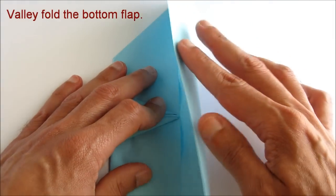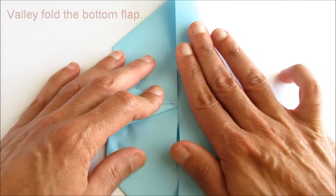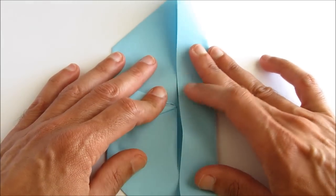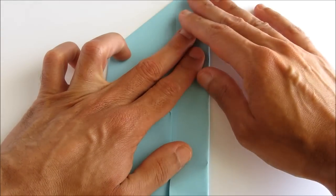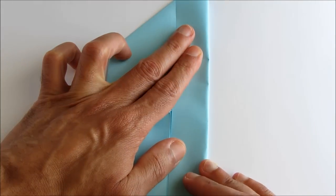Next we're going to start making the fuselage or the body of the airplane. So fold the bottom flap up. Like this.